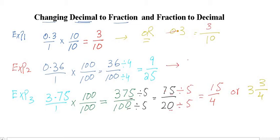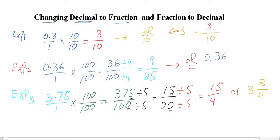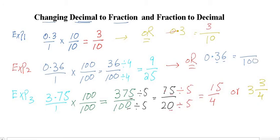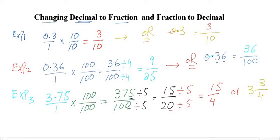Using this shortcut with 0.36: write the number, count how many digits are after the decimal — there are two — so write two zeros in the denominator making it 100. Just remove the decimal and write 36 in the numerator. Then check if simplification is possible. This is divisible by 4, so divide numerator and denominator by 4 to get 9 out of 25.